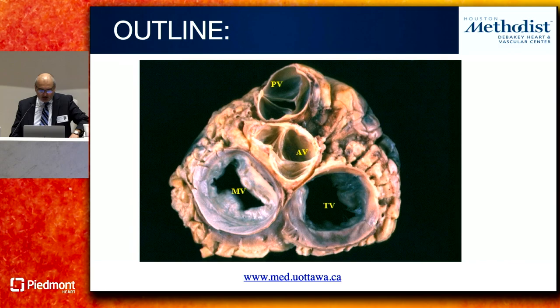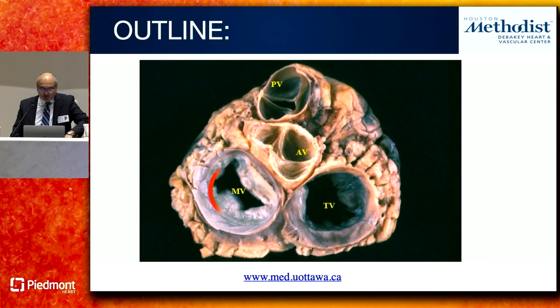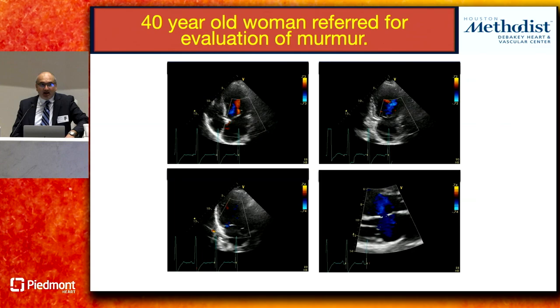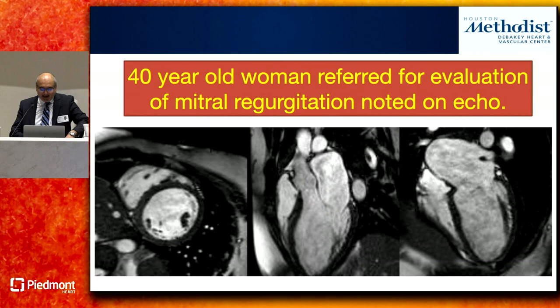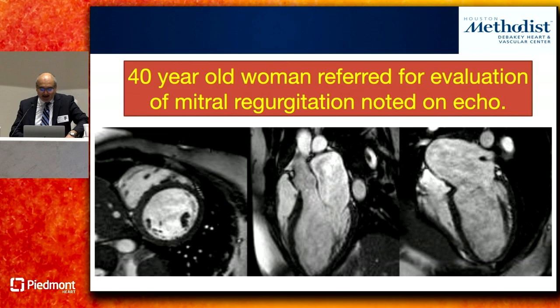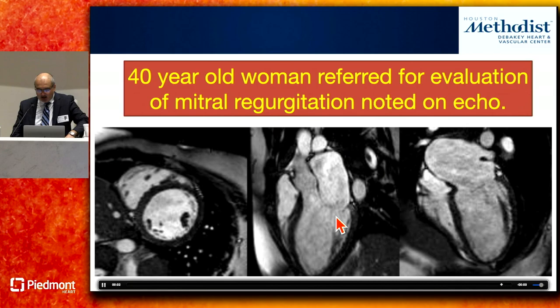Let's start with the mitral valve — probably the most common valve disease we encounter. Going back to the patient with a very eccentric posteriorly directed jet of mitral regurgitation, here's what standard cine images by CMR look like. On short axis, three-chamber, and four-chamber views, we can see a signal void posteriorly with a very eccentric directed jet.